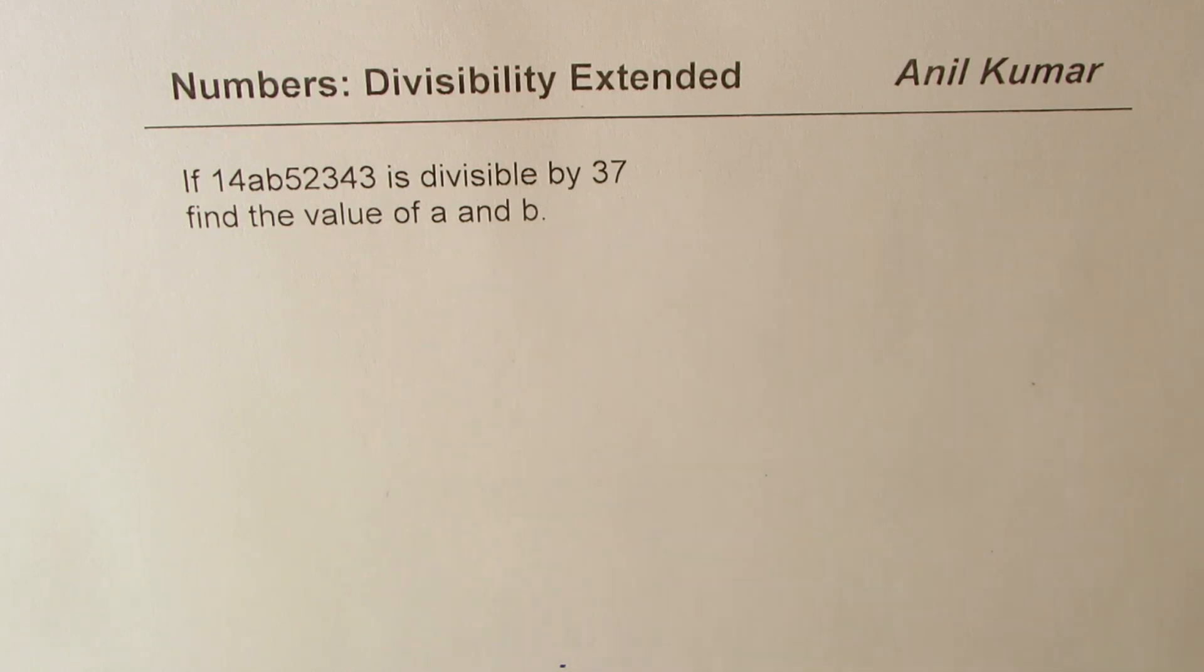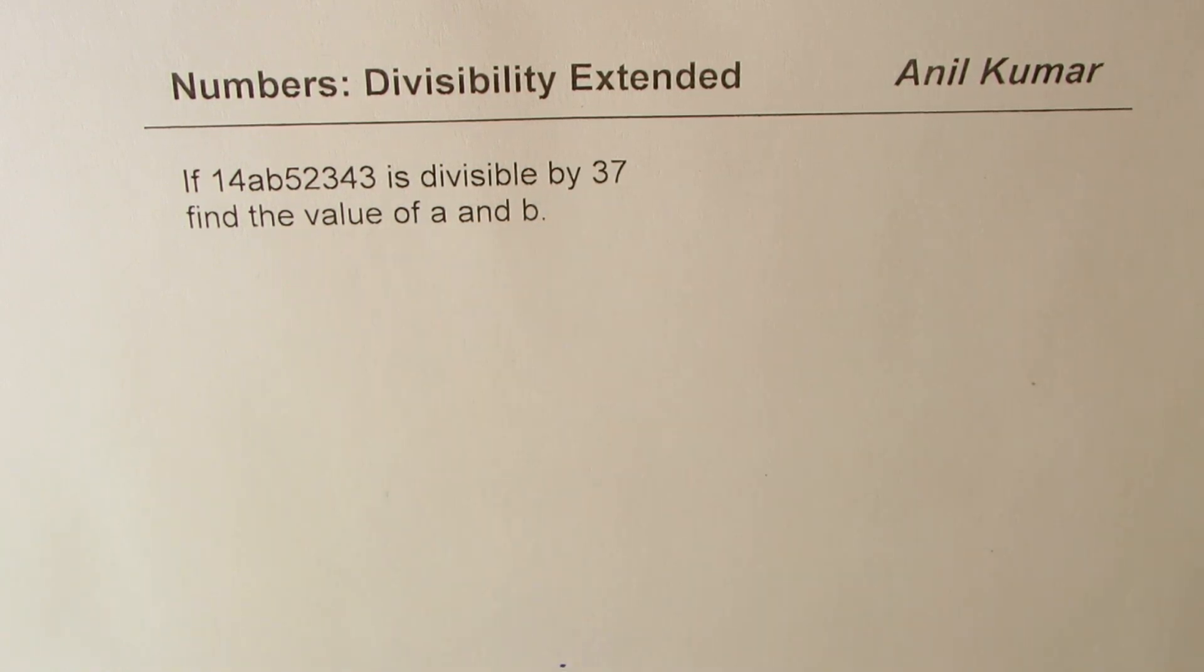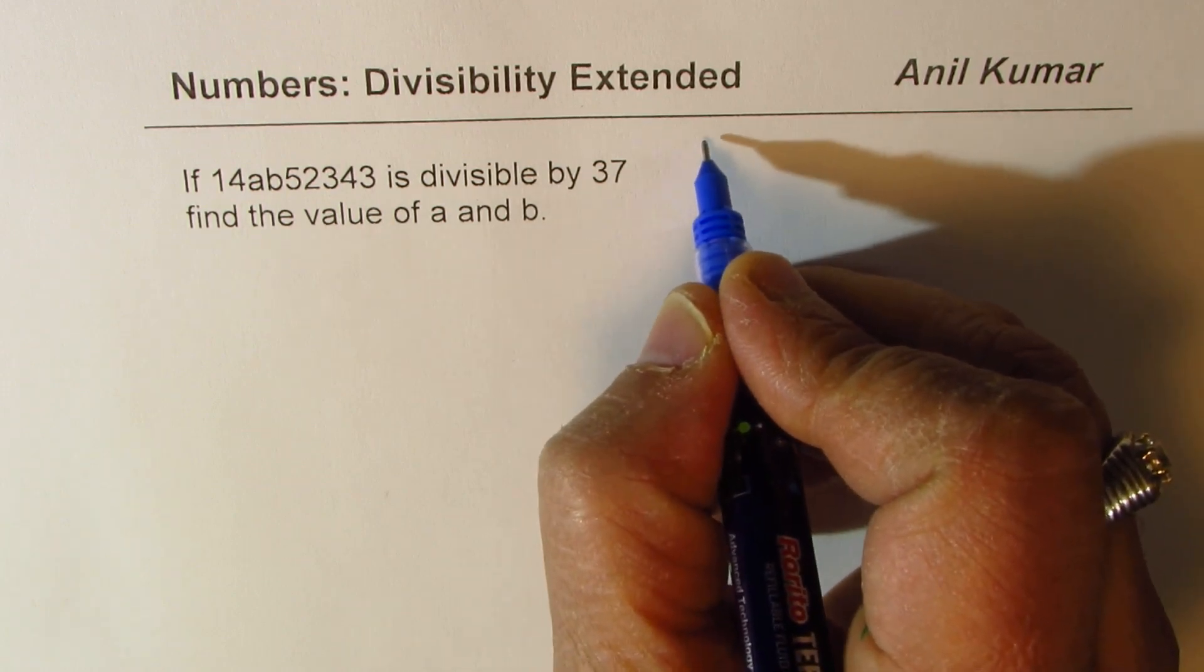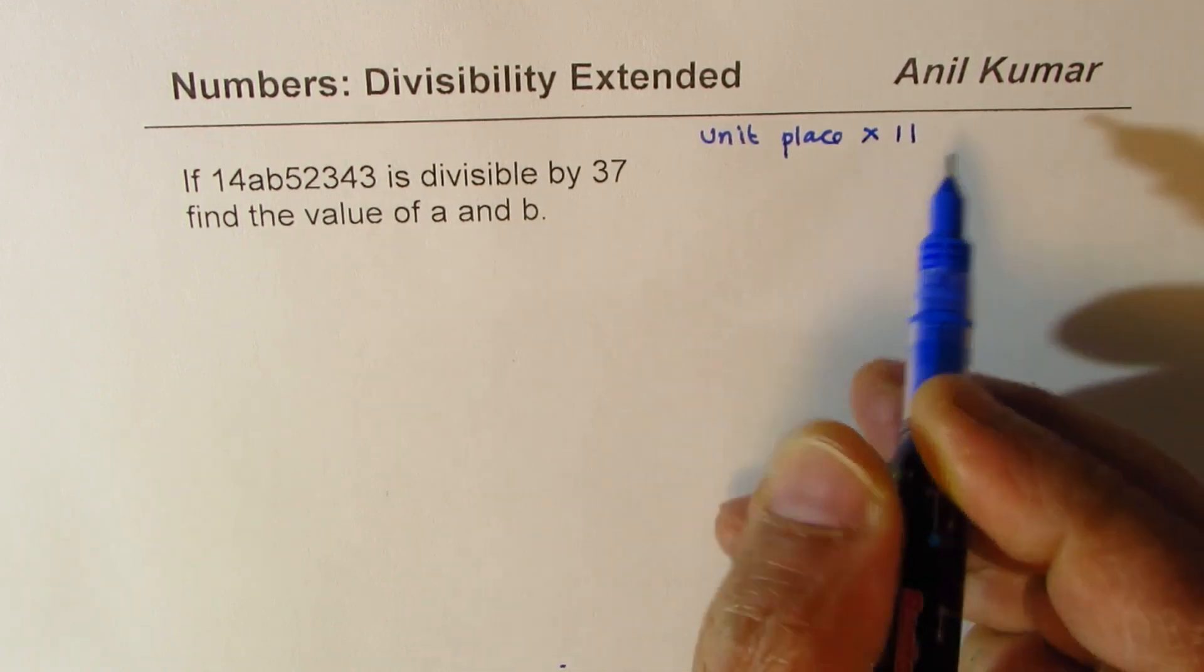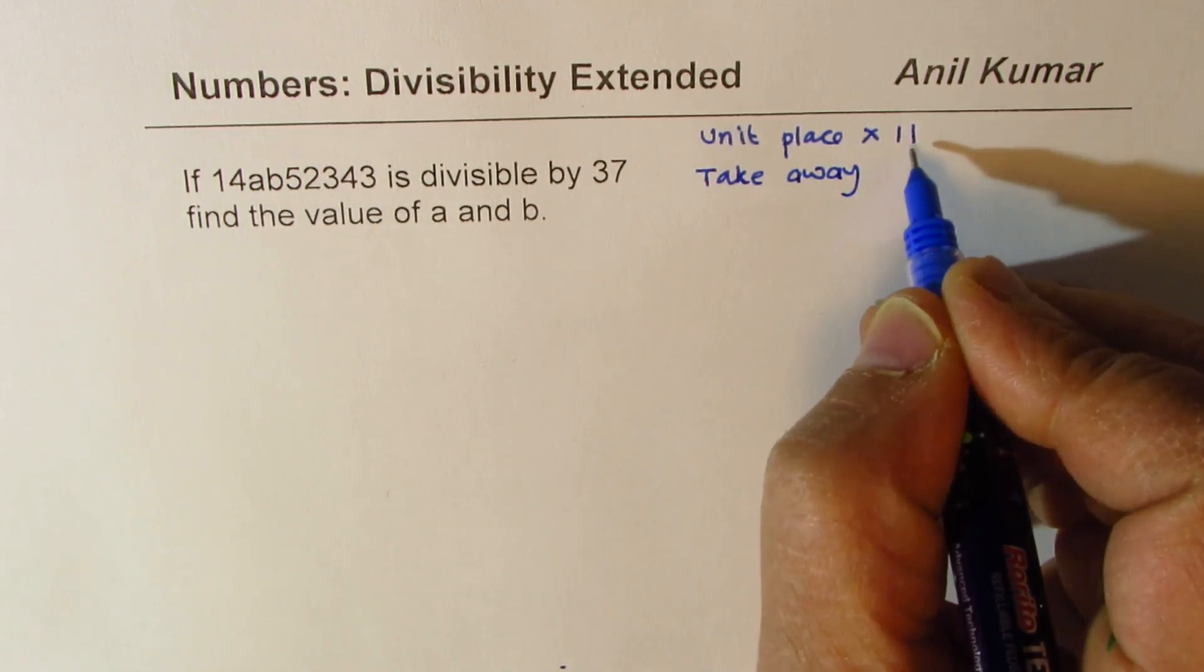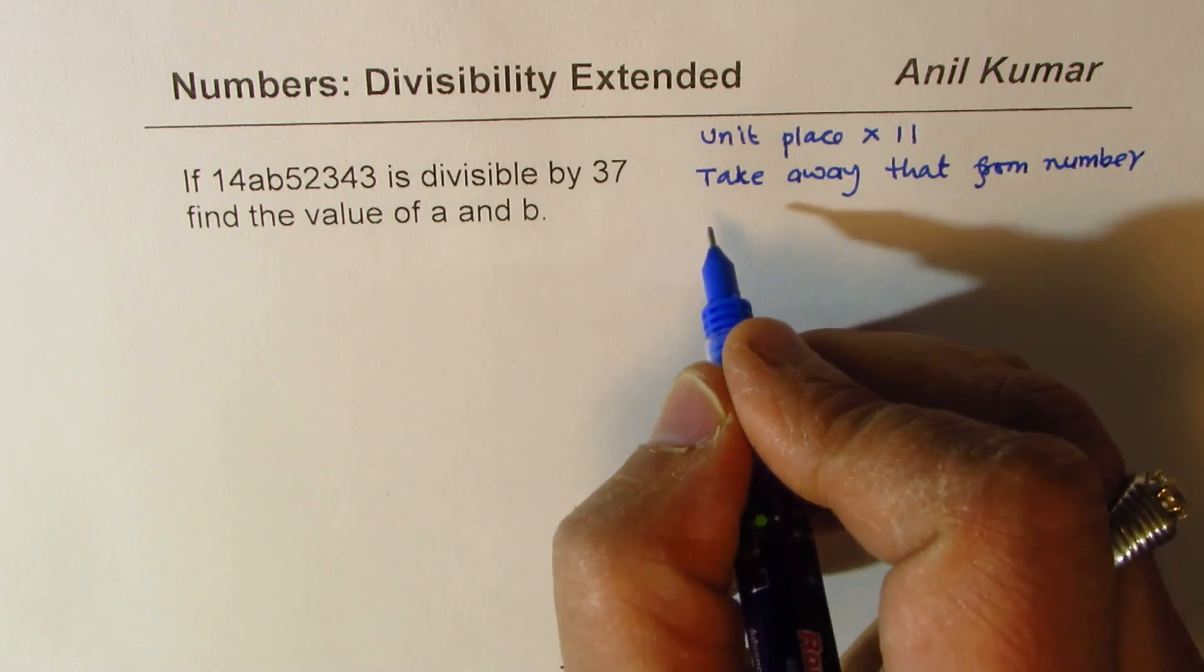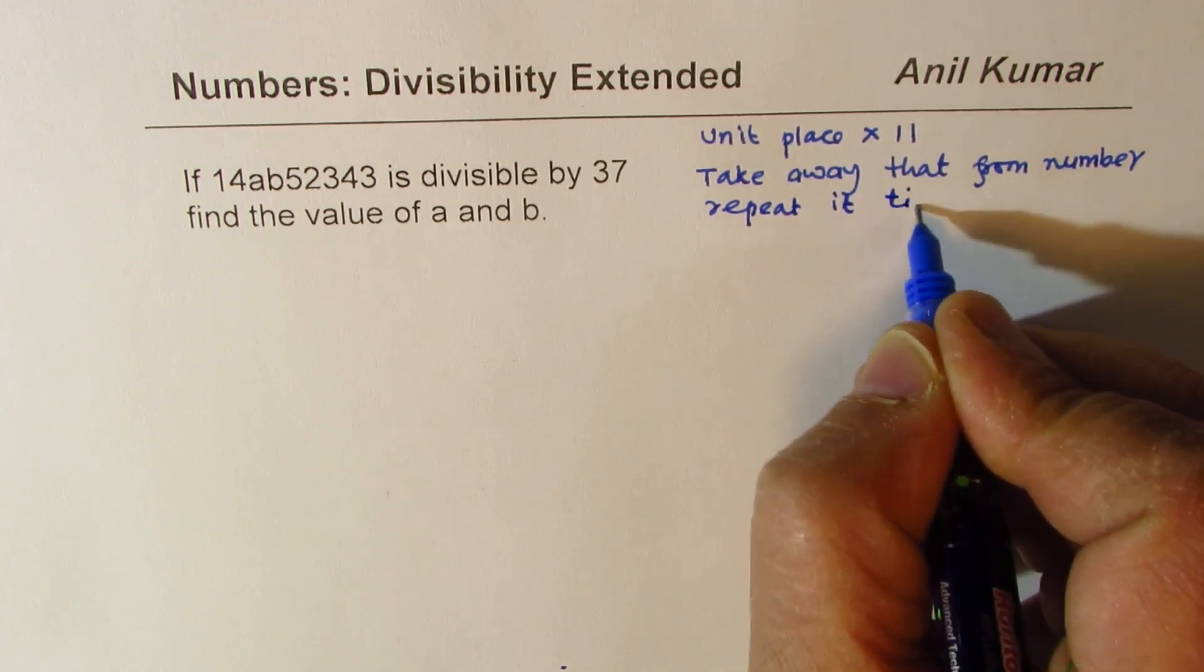So, 37 is a very special number. To find a multiple of 37, what we normally do is we multiply the unit place by 11. The steps involved are unit place times 11, and then you take away that from the number. And this is an iterative process, so you repeat it till the end.